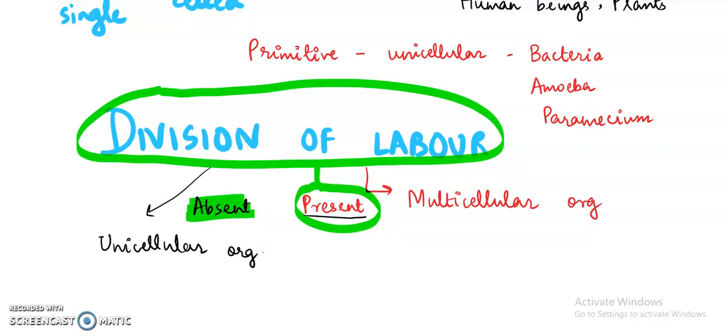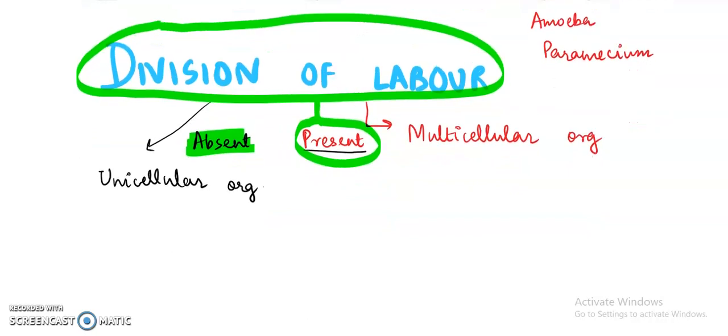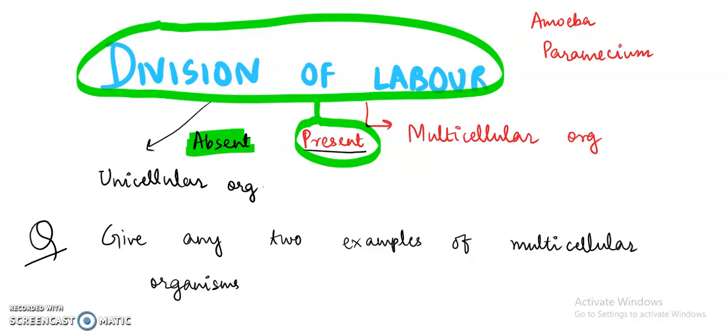In this video we talked about just unicellular and multicellular organisms. So my question for the video is that give any two examples of multicellular organisms whose names were not taken in the video. You need to give any two examples of the multicellular organisms whose examples were not taken in this video. You can write your answers in the comment section of this video. Whether it would be right or wrong, I will be definitely responding back with a comment.